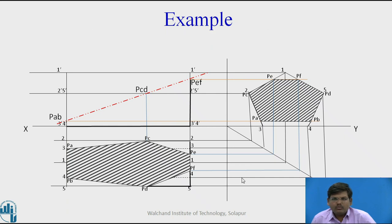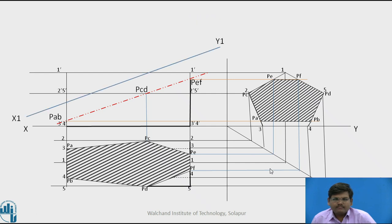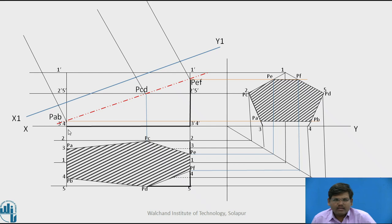Now let us find the true shape of the section. Since the cutting plane is inclined, it does not give the true shape directly. Draw a new XY line — X1Y1 — parallel to the cutting plane. Project the points PA, PB, PC, PD, PE, and PF perpendicular to the new X1Y1 line. We then transfer the distances of these points from the previous top view with respect to the original XY line.